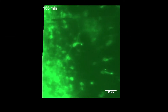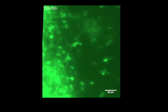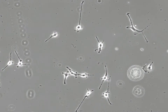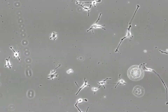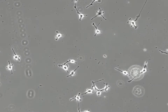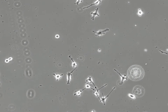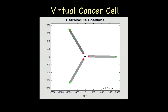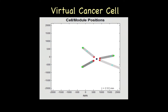Glioblastoma progression is driven largely by the migration of tumor cells out of the tumor and out into the brain. Using engineered materials, we can recreate many aspects of the brain environment outside the body and then study cell migration in a more controlled environment. From these experiments, we're now developing theoretical models of a virtual cancer cell that we can use to simulate various ways to disable cancer cell migration.